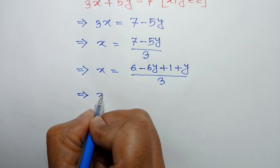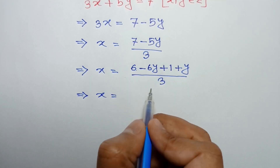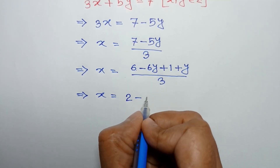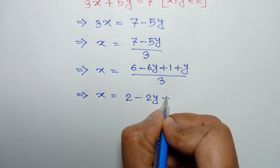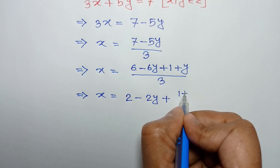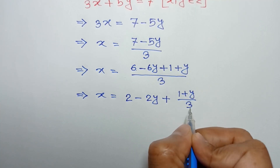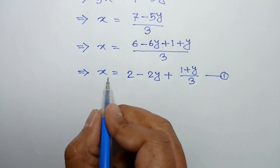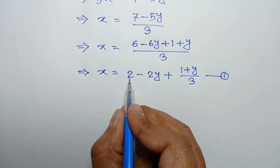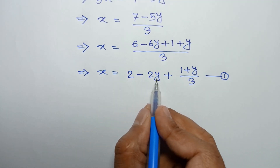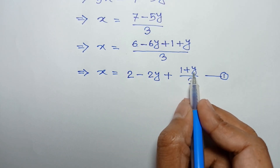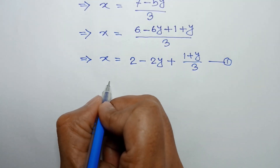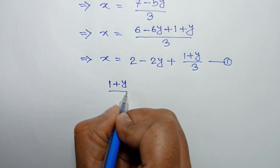So x is equal to 6/3 which is 2, minus 6y/3 which is 2y, plus (1 + y/3). Let's call this equation number 1. Since x is an integer, 2 - 2y is also an integer, and therefore (1 + y/3) must also be an integer.